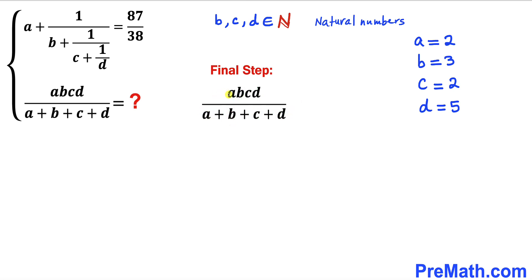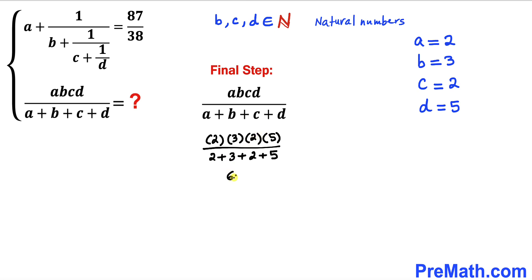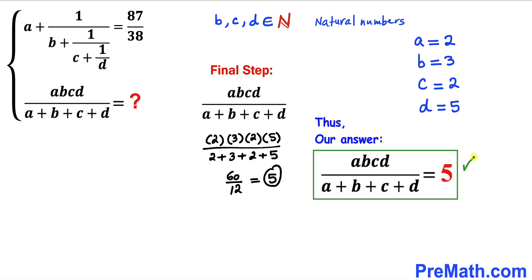For the final step, let's find the value of the expression by plugging in the values. a is 2, b is 3, c is 2, d is 5. So we compute: (2 × 3 × 2 × 5) divided by (2 + 3 + 2 + 5). Multiplying the numerator gives us 60, and the denominator is 12. Simplifying, 60 divided by 12 equals 5. Our answer is 5.